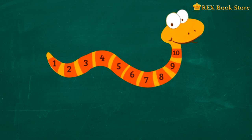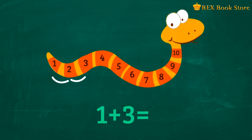Ready for some exercises? Let's go. See the snake? The snake has ten parts. We'll use these to solve the following items. Can you tell me what one plus three is equal to? Let's count on three times starting from the tail. One, two, three. Where did we land? At the number four. So we say that one plus three is equal to four.